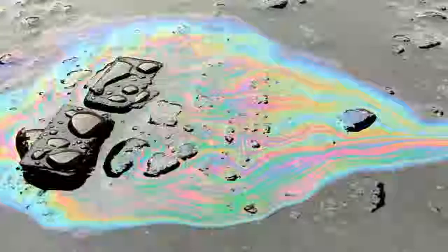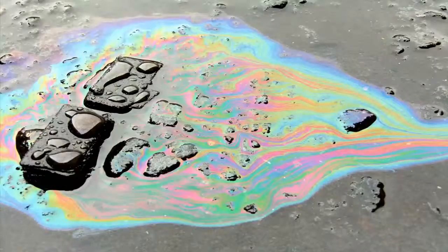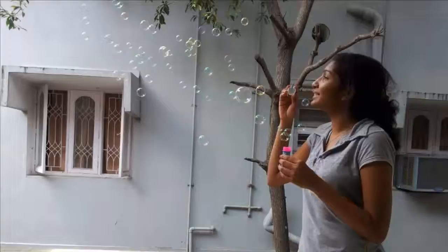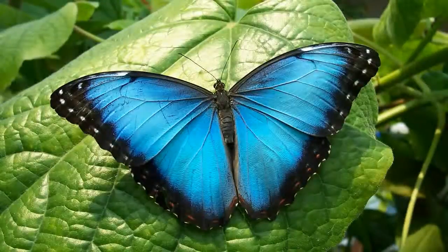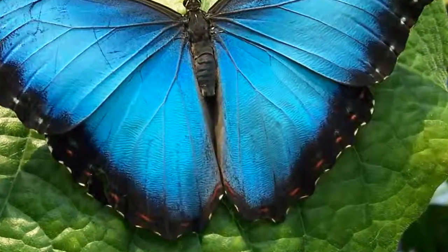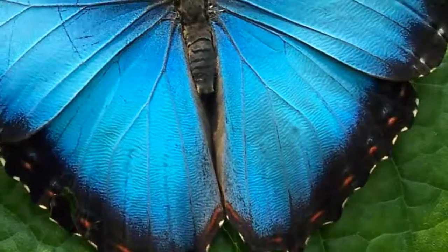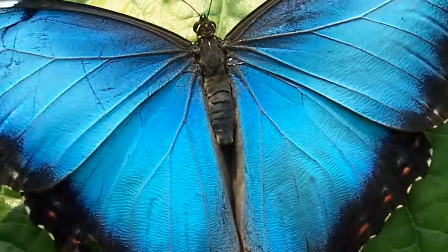Interference can be seen in nature. For example, you must have seen oil spills on roads. They give colorful patterns, or colors in soap bubbles, or sometimes you can even see them in insects. A beautiful example is the blue morpho butterfly. It turns out they don't really have that blue pigment. Then what gives them this striking color? Interference of thin films.